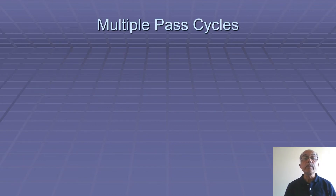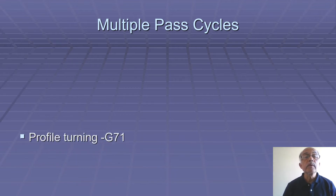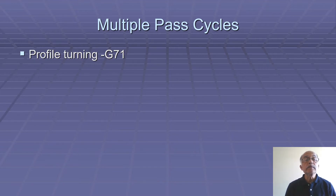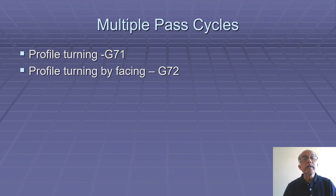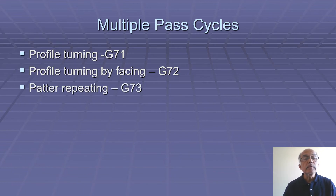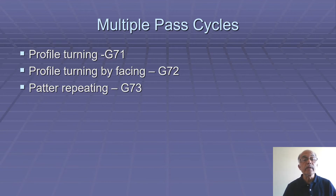Now we'll discuss various multiple pass cycles. These are important. First is profile turning — profile turning is a very common operation in CNC turning, and for this G71 cycle is used. Then profile turning by facing uses G72 cycle. In G71 the profile turning is done by diameter turning; in G72 profile turning is done by a facing operation. G71 is commonly used. Third is pattern repeating — G73 is used for pattern repeating cycle. Sometimes a job is in the form of a casting; here we can use the profile repeating or G73 cycle.